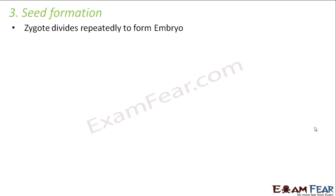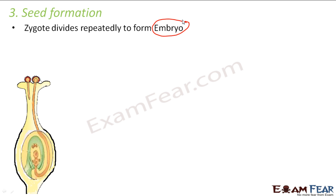After zygote formation, we will see how the seed is formed. The zygote will divide repeatedly to form an embryo. The zygote was a single cell, but this one cell will divide repeatedly — cell divisions will occur, and as a result many cells will be formed. This multi-celled organism is called an embryo. This embryo, together with the endosperm discussed previously, forms the seed.